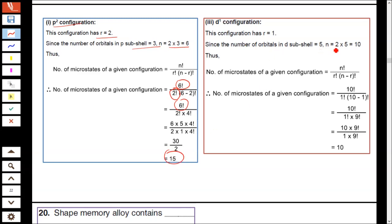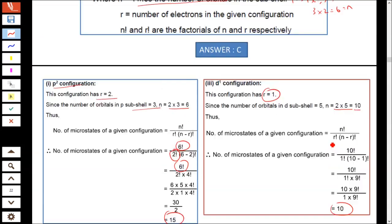For D¹ configuration, 2 × 5 = 10, so N = 10. R = 1, so 10 factorial divided by 1 factorial times 9 factorial, which equals 10. Hence answer is 15 and 10.